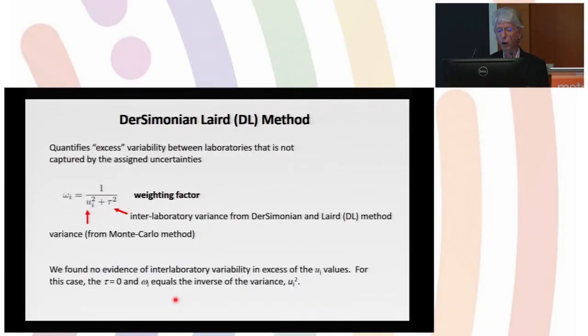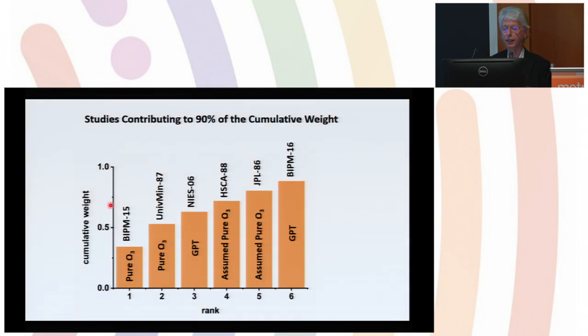These weighting factors also depend in general through the Dersimonian-Laird analysis on the so-called tau term, which is a measure of interlaboratory variance. We found very little evidence of any—it had very little importance. Ultimately the weighting factors for each case was the inverse of the variance of the probability distribution, whether it be symmetric or asymmetric. It's pretty straightforward.